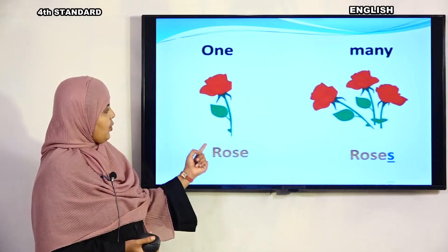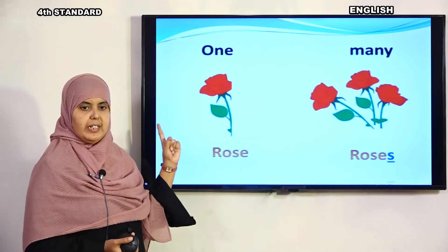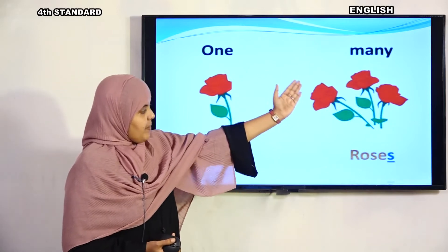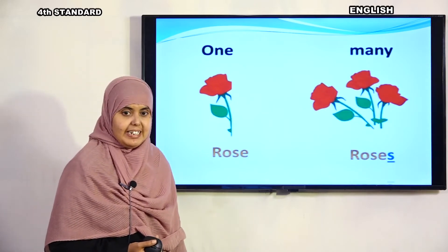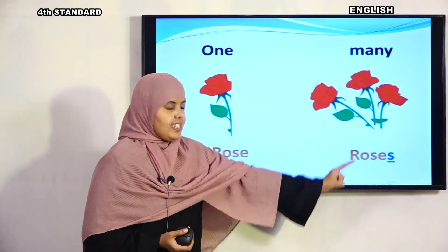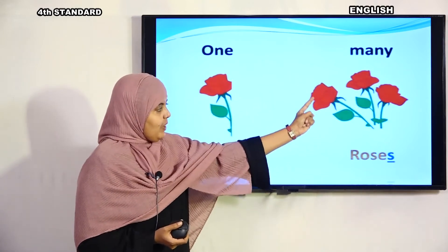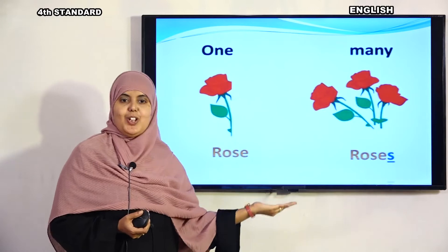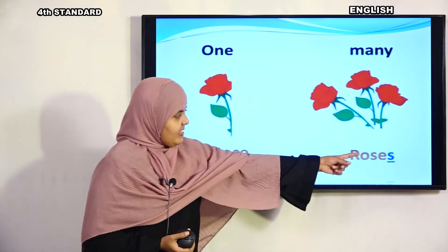One rose — singular. Many roses — we add 'es' to make it plural. One rose becomes many roses when there is more than one. Here, 'rose' plus 'es' gives us 'roses'. So when there is more than one, we add 'es' to make it plural.